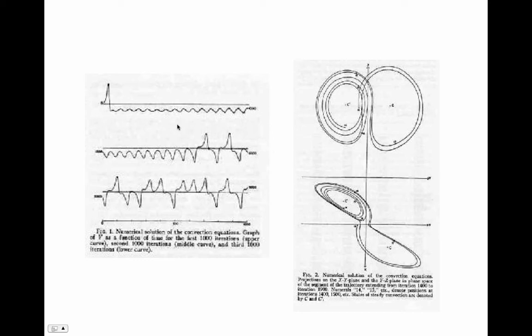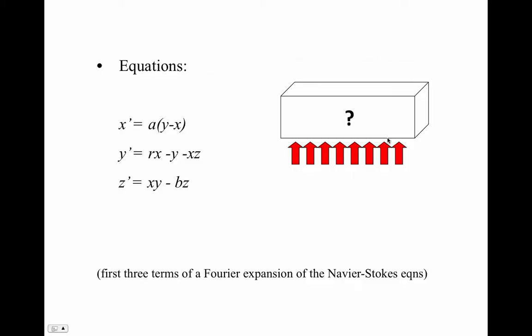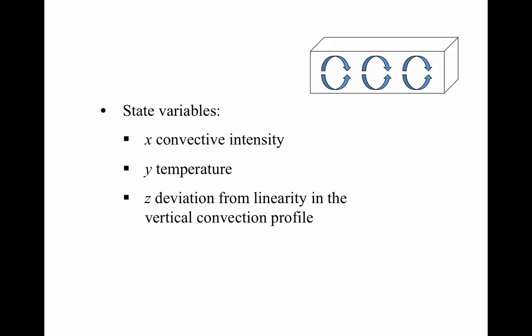He started two trajectories a little ways apart and they both traced out the same attractor. The equations he was playing with look like this. For those who know about the Navier-Stokes equations — partial differential equations that model fluid flow — Lorenz made a truncation of those to three modes. What he was modeling was a chunk of fluid being heated from below. Convection rolls form. The Lorenz system is a very coarse-grained model of this using just three state variables: how much the convection rolls are spinning, what the temperature is, and a slightly odd state variable having to do with non-linearity in the vertical convection profile.